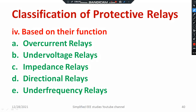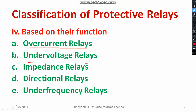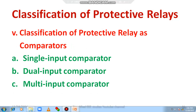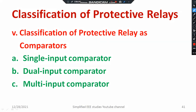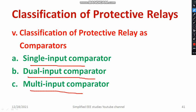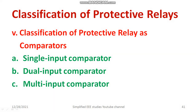Based on the function, relays can be divided as: overcurrent relay for overcurrent protection, undervoltage relay for undervoltage protection, impedance relay (V/I — voltage by current), distance relays, directional relay to prevent reverse power flow, and underfrequency relay. Additionally, protective relays can be classified as comparators: single input comparator, dual input comparator, and multi input comparator.